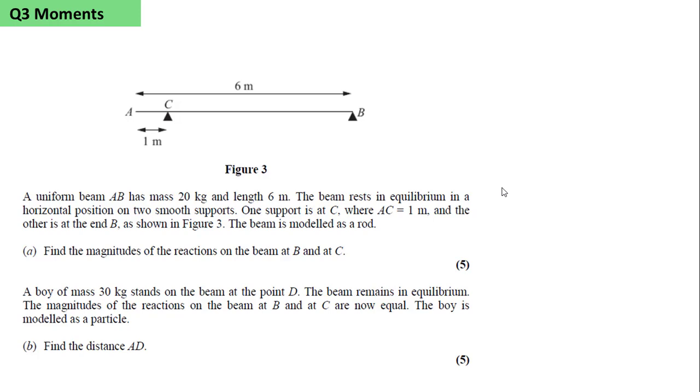Question 3. Moments. A uniform beam, AB, has mass 20kg and length 6m.